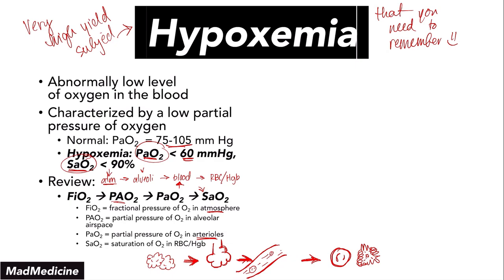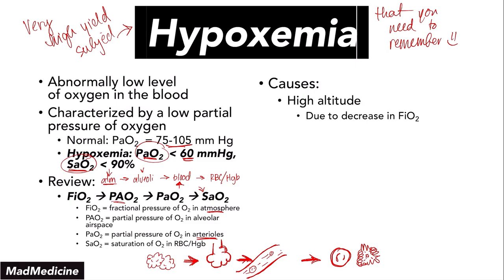All these steps can affect oxygen levels and the partial pressure of oxygen in our blood. The second cause affects PAO2. Oxygen is inversely related to CO2 in the alveoli — when we breathe, we take in oxygen and expel CO2. So if PAO2 increases, PACO2 decreases, and vice versa. High altitude is the first cause, affecting FiO2.